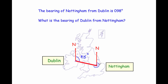We're looking for this angle here. To do that, we'll first work out the angle inside the north lines. As you'll notice, the two north lines are parallel, so these are co-interior angles — this angle and this angle will add up to 180 degrees. So we do 180 minus 98 to find the size of this inner angle.